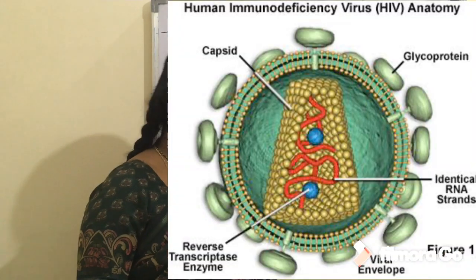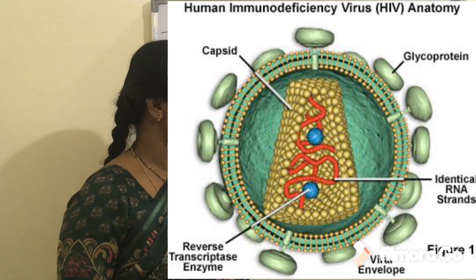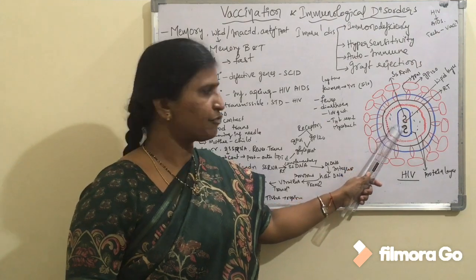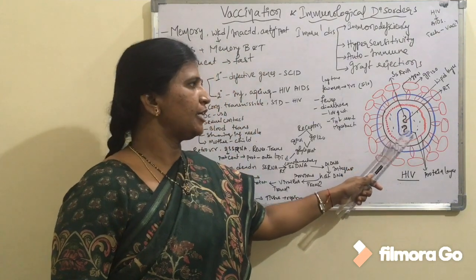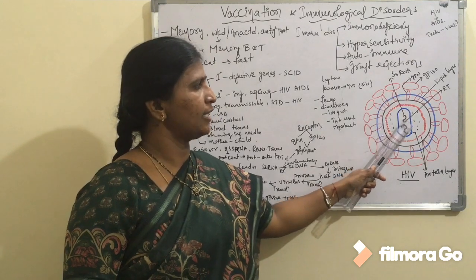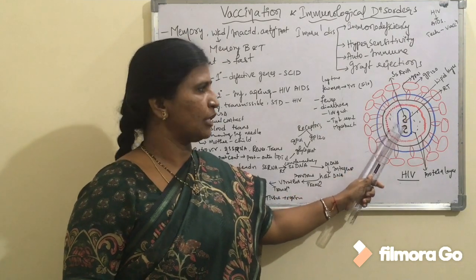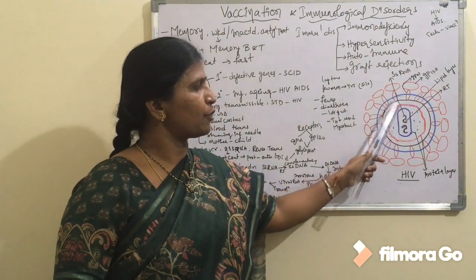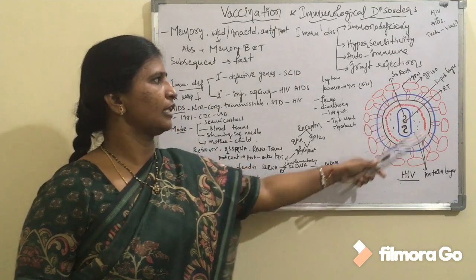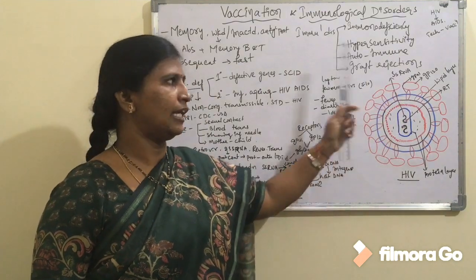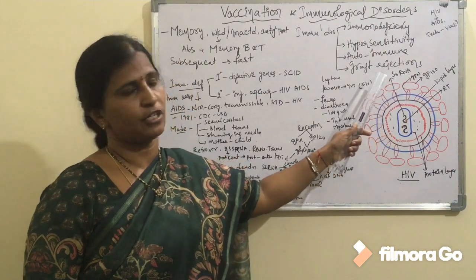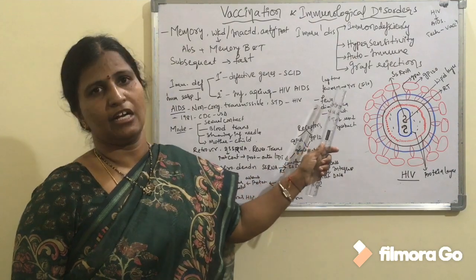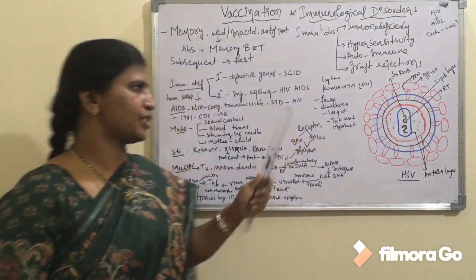Coming to the structure of HIV, or Human Immunodeficiency Virus: it consists of two strands of single-stranded RNA and is a retrovirus. These RNA molecules are covered by protein molecules, and two molecules of reverse transcriptase enzyme are present. Upon the protein layer, one more protein layer is present, surrounded by a lipid layer. On the surface of the lipid layer, there are glycoproteins known as GP120 and GP41, which provide attachment sites for receptors present on the host cell.